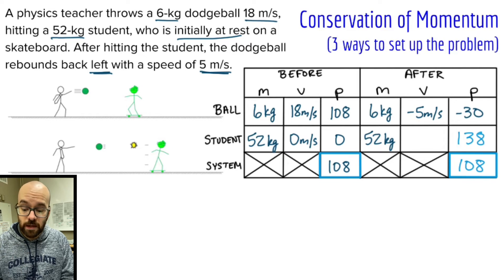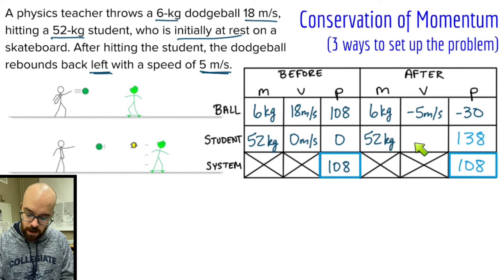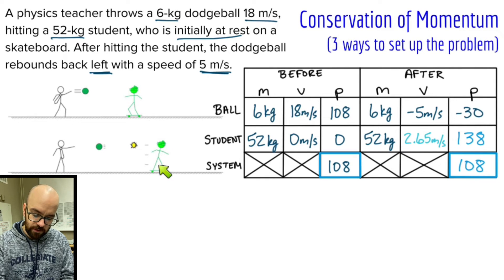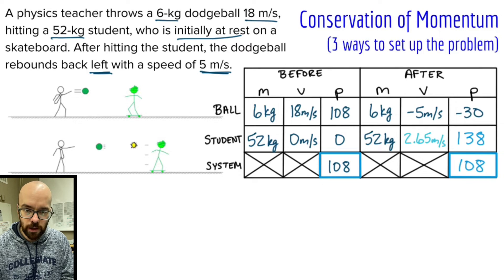Once I have the momentum P, I know that P equals MV, so I take P divided by M to get velocity. Doing that, I get 2.65 meters per second. That's the student's velocity on their skateboard after they get hit by this bowling-ball dodgeball.